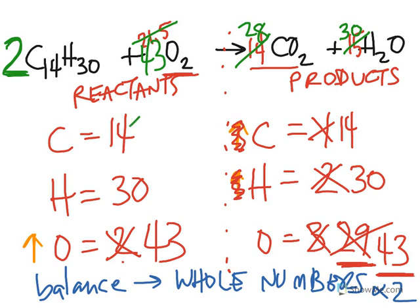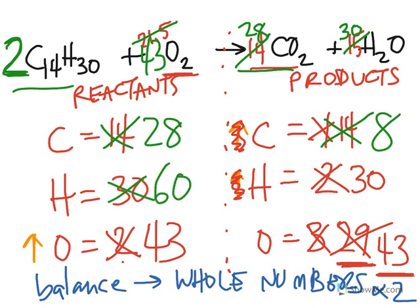So now, instead of 14 carbons, I have 28 carbons. 28 carbons. Instead of 30 hydrogens, I have 60 hydrogens. But still balanced.